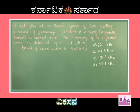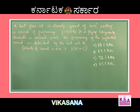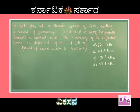Let's take up the next problem. A bat flies at a steady speed of 4 m/s emitting a sound of frequency 90 kHz. It is flying horizontally towards a vertical wall. The frequency of the reflected sound as detected by the bat will be — given velocity of sound in air is 330 m/s. The options are 88.1 kHz, 87.1 kHz, 92.1 kHz, and 89.1 kHz.